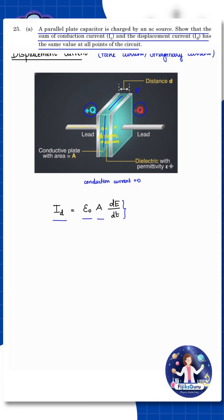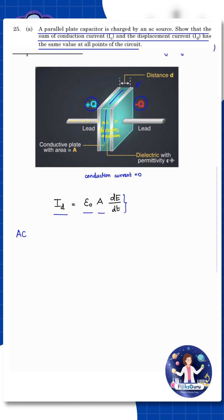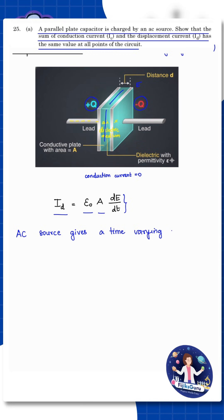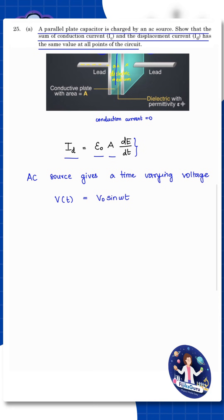Now we will understand the basic concept and solve the problem. The AC voltage source gives a time-varying voltage, which we can represent as V equals V₀ sin(ωt). That is the sine wave, where V₀ is the peak voltage. As time changes, the capacitor charge also changes with time.